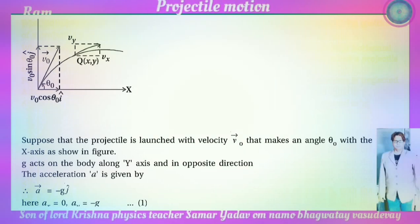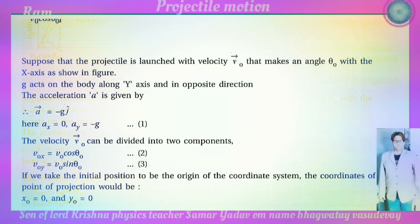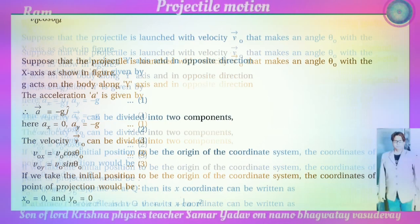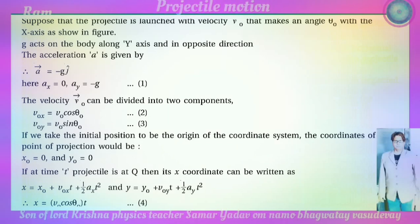Gravity acts along the negative y-axis, so acceleration a is equal to minus g j-hat. Here, a_x is equal to zero and a_y is equal to minus g. The velocity v-zero can be divided into two components: v-zero-x is equal to v-zero cos theta-zero, and v-zero-y is equal to v-zero sin theta-zero. Taking the initial position as the origin, the coordinates are x-zero equal to zero and y-zero equal to zero.